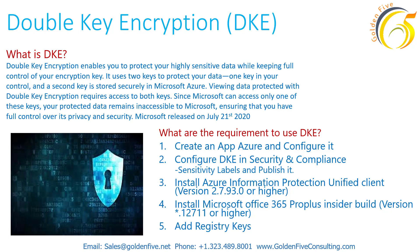We are left with three more steps required on the client machine side. These steps are: install the Azure Information Protection unified client version 2.7.93 or above, Office 365 Pro Plus Insider build version 12711 or higher, and configure a couple of registry keys. You can deploy these using Microsoft Intune, SCCM, or whichever packaging software you have, or via group policies or a batch file. Always test with a few test users and test machines before deploying to production.